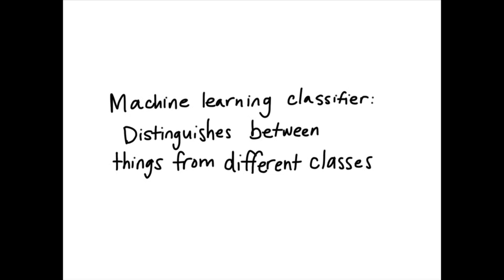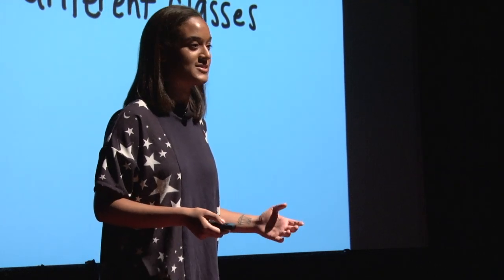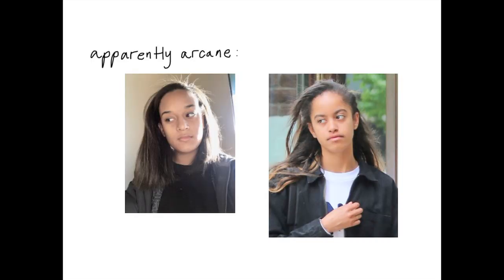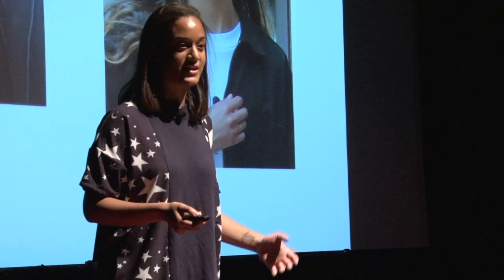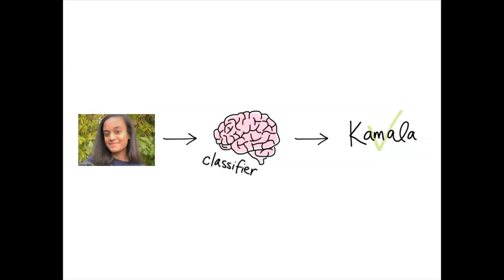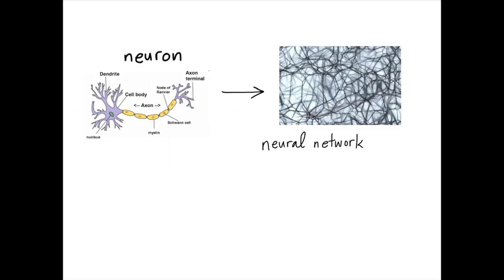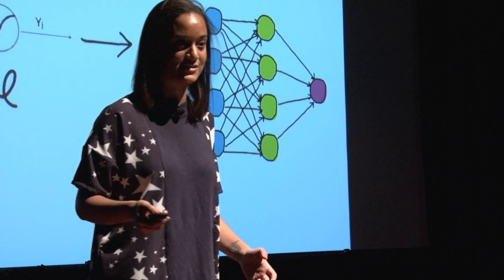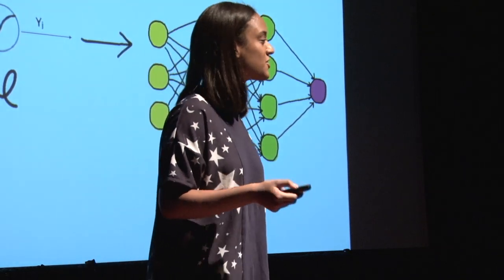You can build a machine learning classifier that will learn how to distinguish between images from different classes. For example, you can give a classifier the apparently arcane task of distinguishing between me and Malia Obama. The goal is that you'll be able to give the classifier some image of me and it'll decide that it's me rather than Malia. It's not actually using a brain, but it's similar. Humans use networks of neurons to decide how to respond to sensory input, and a computer can use a network of artificial neurons that use math instead of neurotransmission to decide whether I'm myself or not.